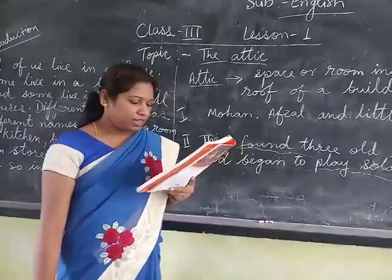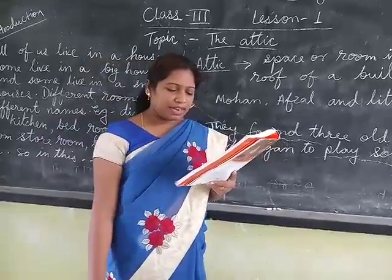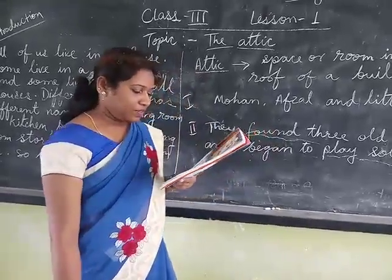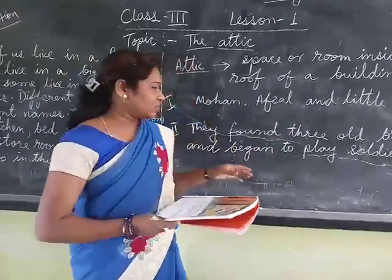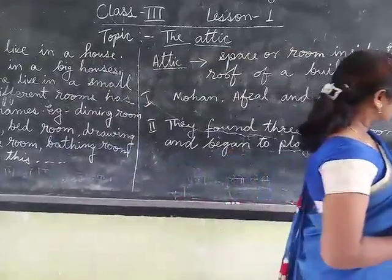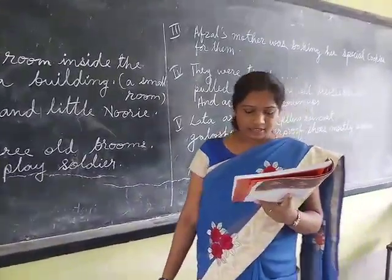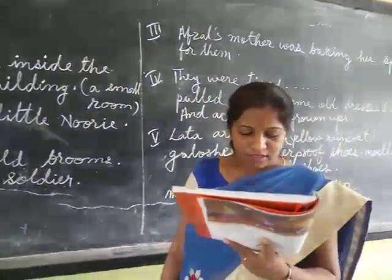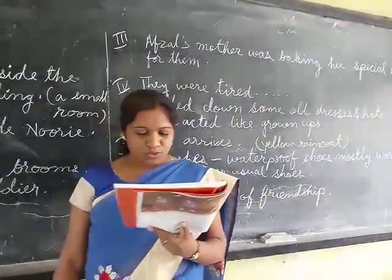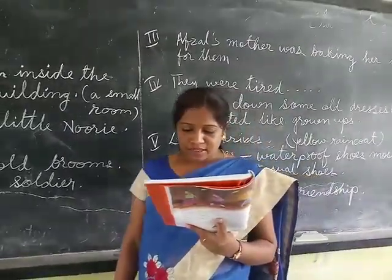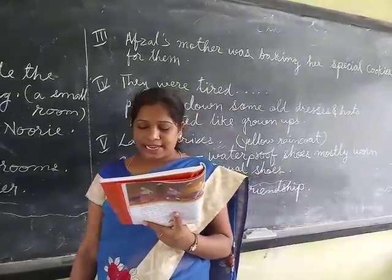Meanwhile, Lata arrived. She was their friend who was very well dressed — wrapped in a yellow-red coat and wearing matching galoshes. Galoshes means waterproof shoes mostly worn on rainy days. She had brought a basket with two of her extremely lovable kittens in it.